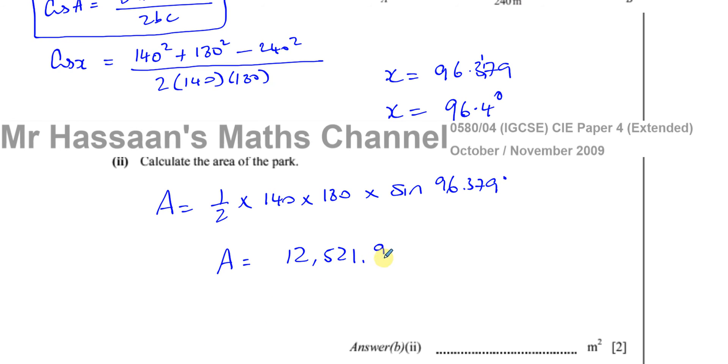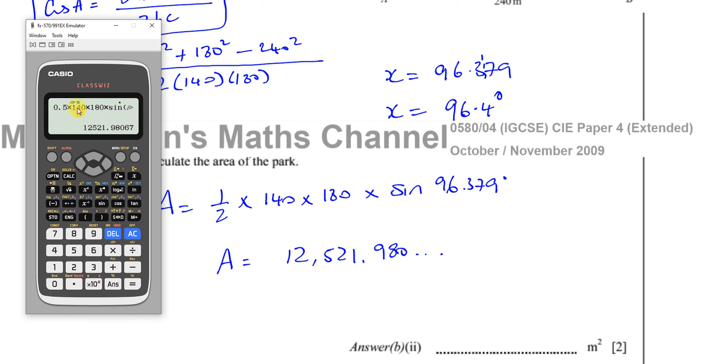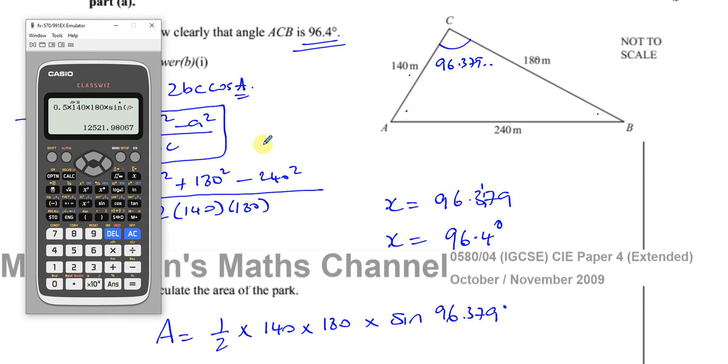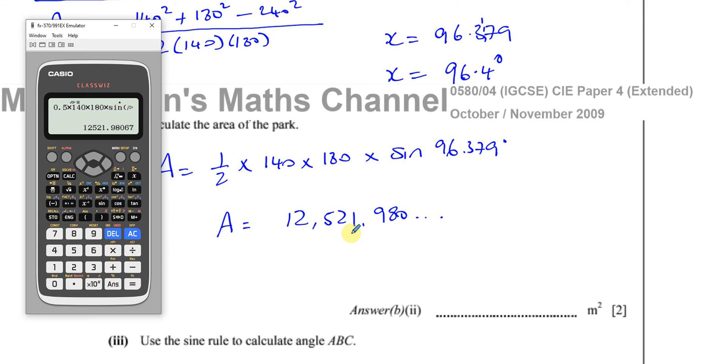And it continues on like that. Let's just make sure I didn't do anything silly, 140 times 180 times the sine of the thing, times a half. Yeah, that's fine.